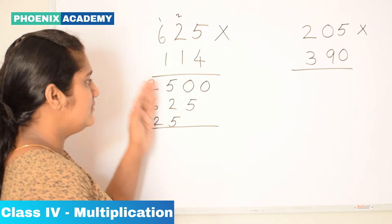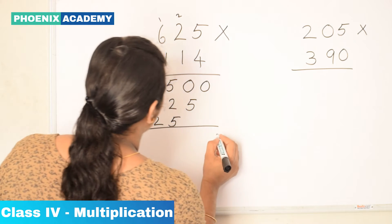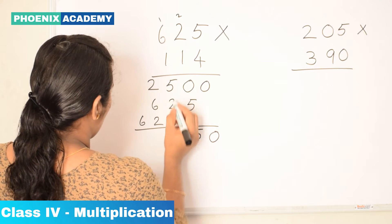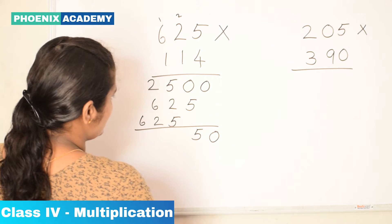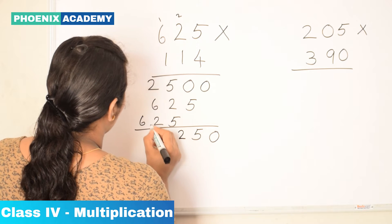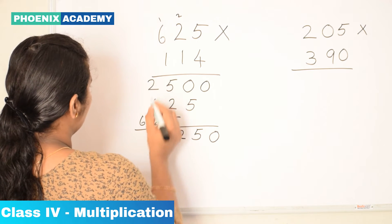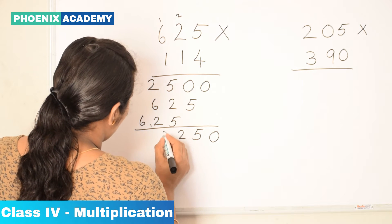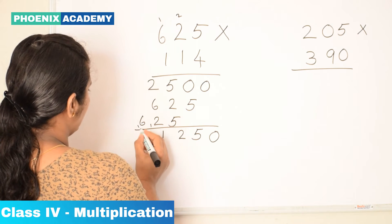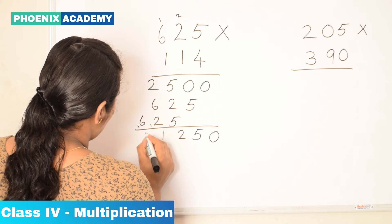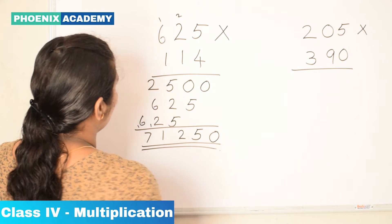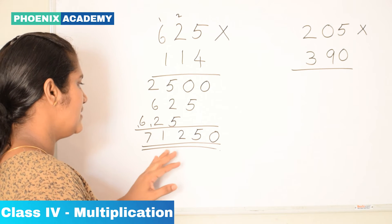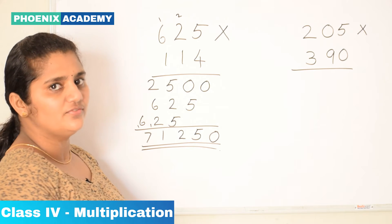Then we can add these 3 partial products. 0 plus 0 is 0. 5 plus 2 is 7. 7 plus 5 is 12, carry forward 1. 2 plus 6 is 8, plus 2 is 10, plus 1 is 11, carry forward 1. 6 plus 1 is 7. So the product of 625 and 114 is 71,250.